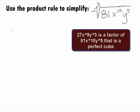Hey, 27x to the 9th y cubed is a factor of 81x to the 10th y to the 5th and is a perfect cube.